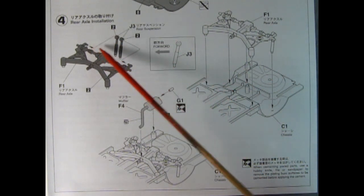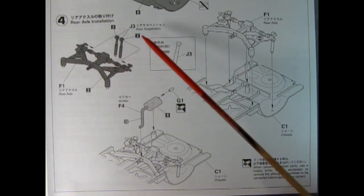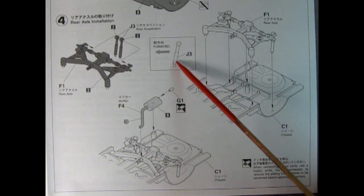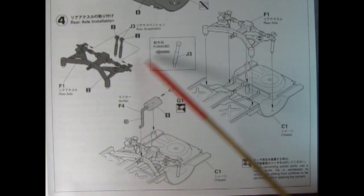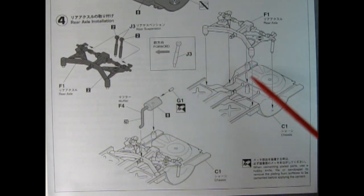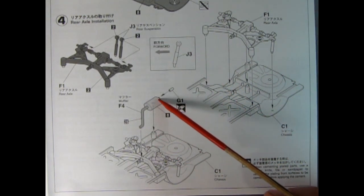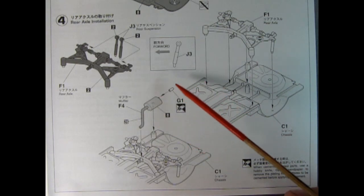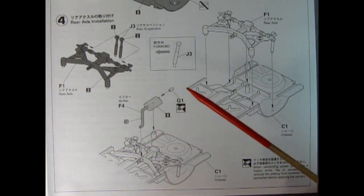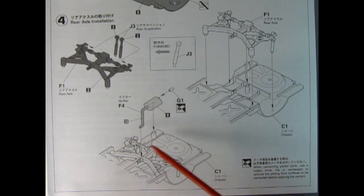In step four we have this independent rear axle, very much like the Jaguar style. Corvette also copied this although here it's got these A arms back here that's quite different from the Corvette. We also have two shock absorbers which go on these little pins facing forward. Here we have this nice little muffler with a little metal piece on the end. I'm not sure if this is going to be a chrome piece or an actual metal piece.